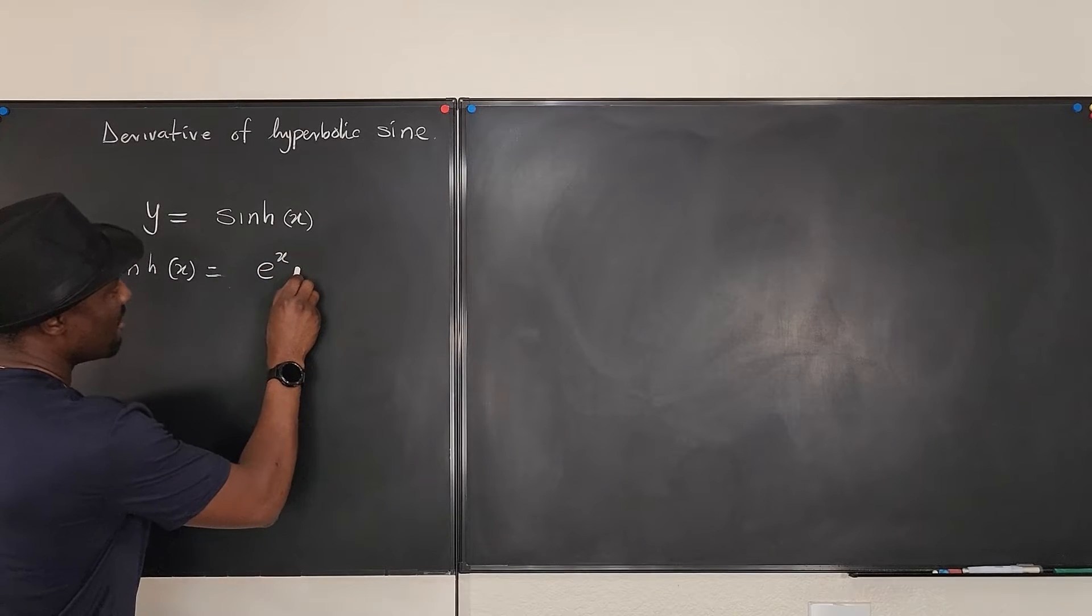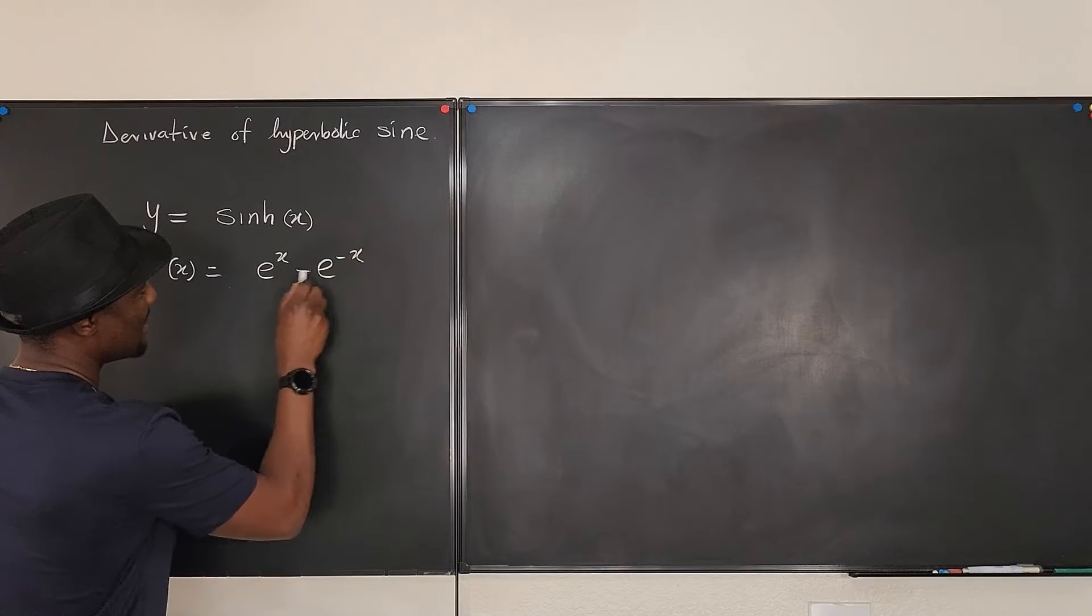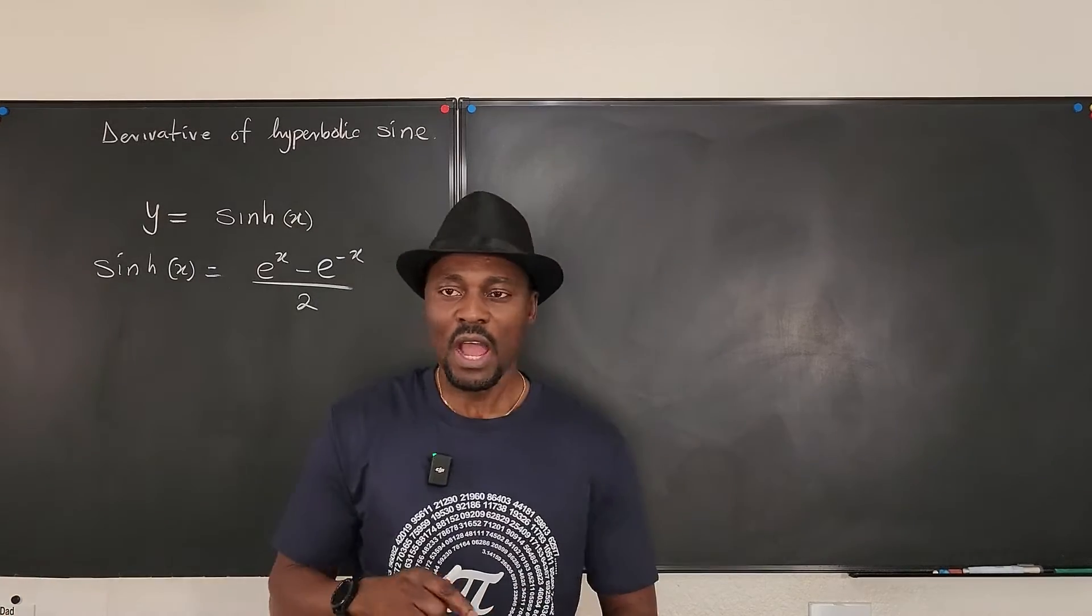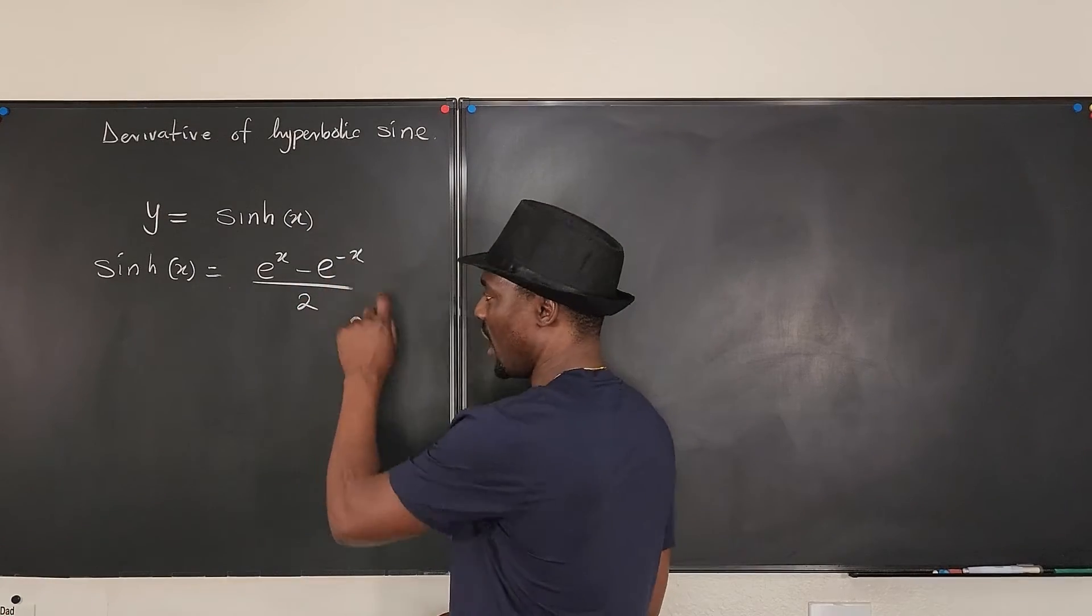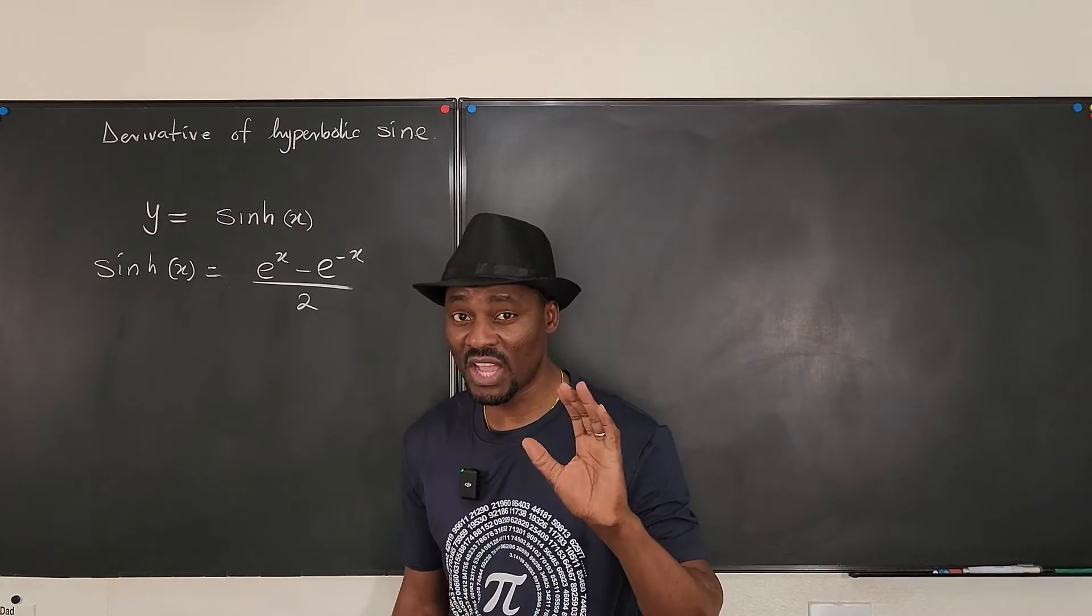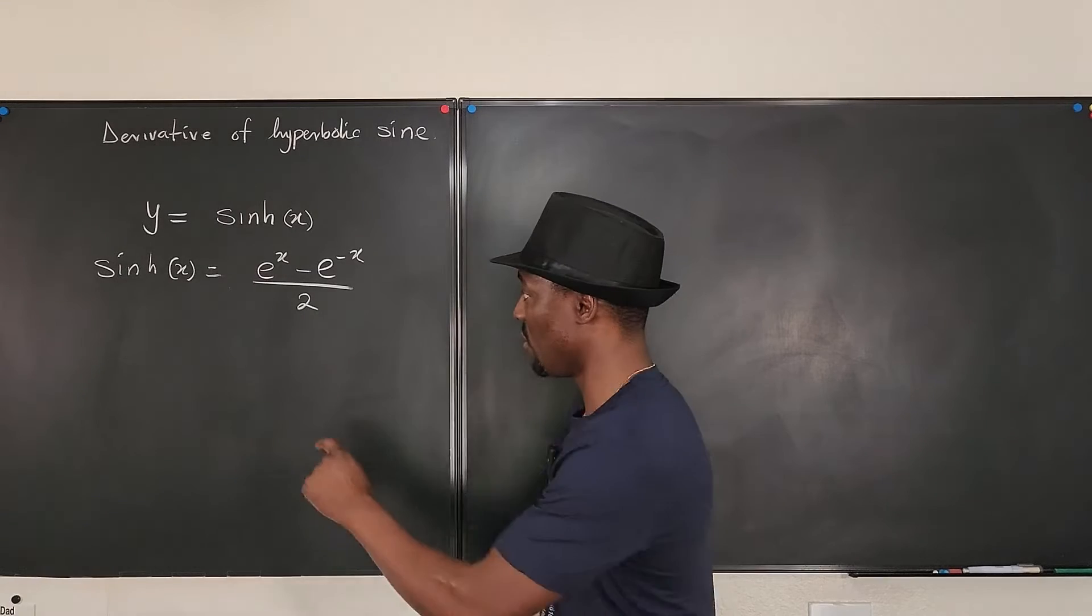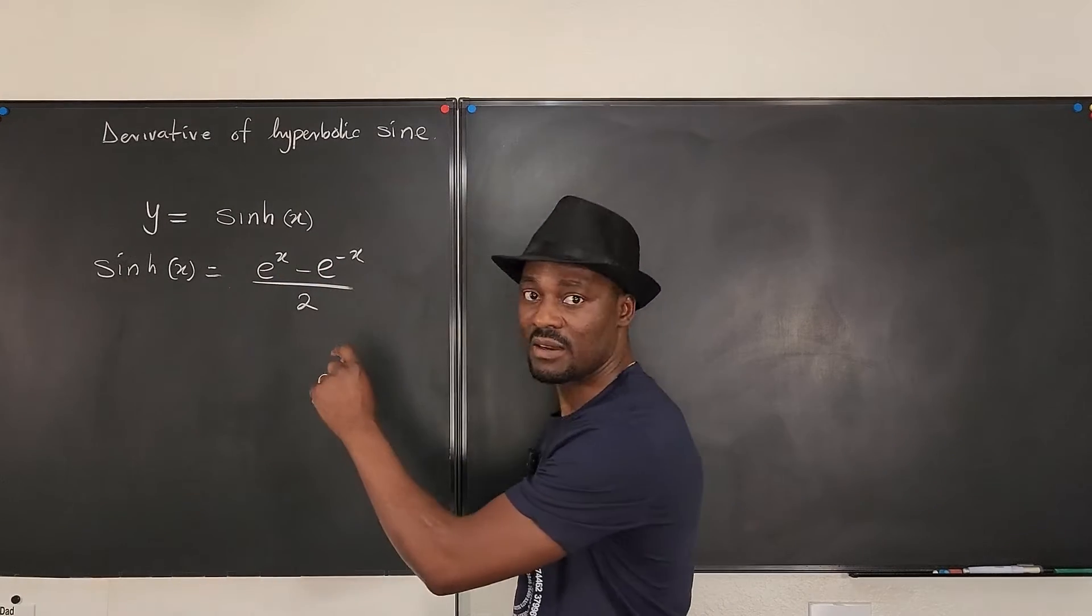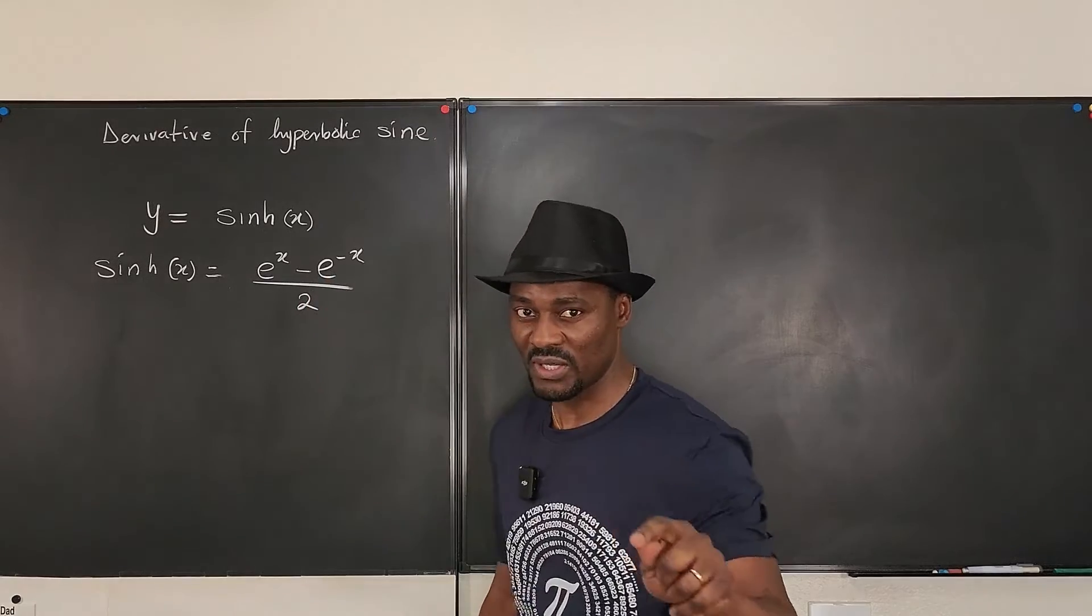to the x minus e to the negative x over 2. Now, how do you know whether it's going to be negative or not? The minus sign is important—which one has the minus sign matters. You can't put the minus sign in the wrong place because it means